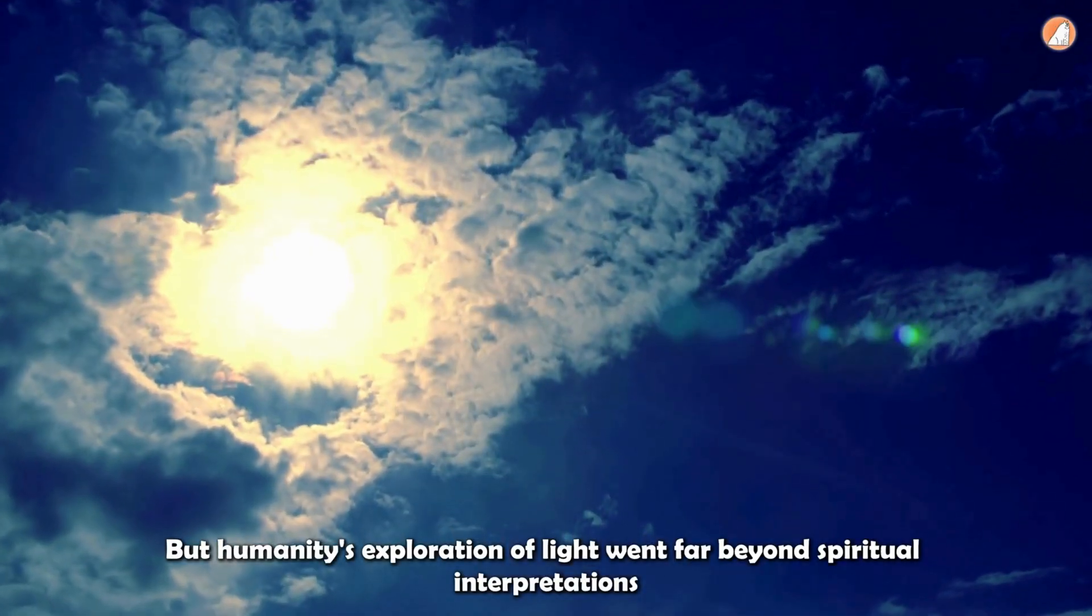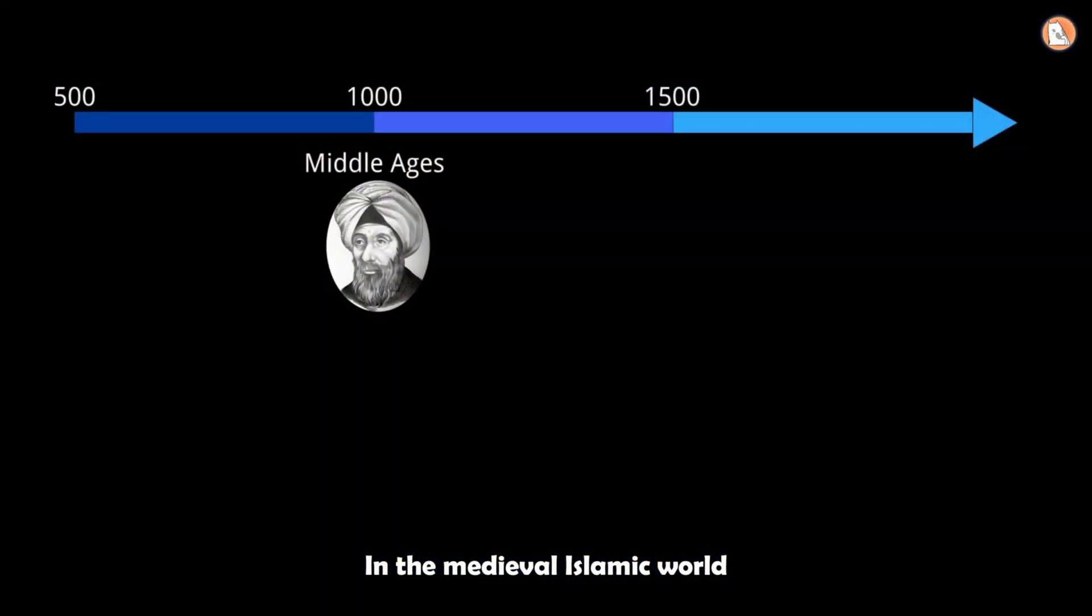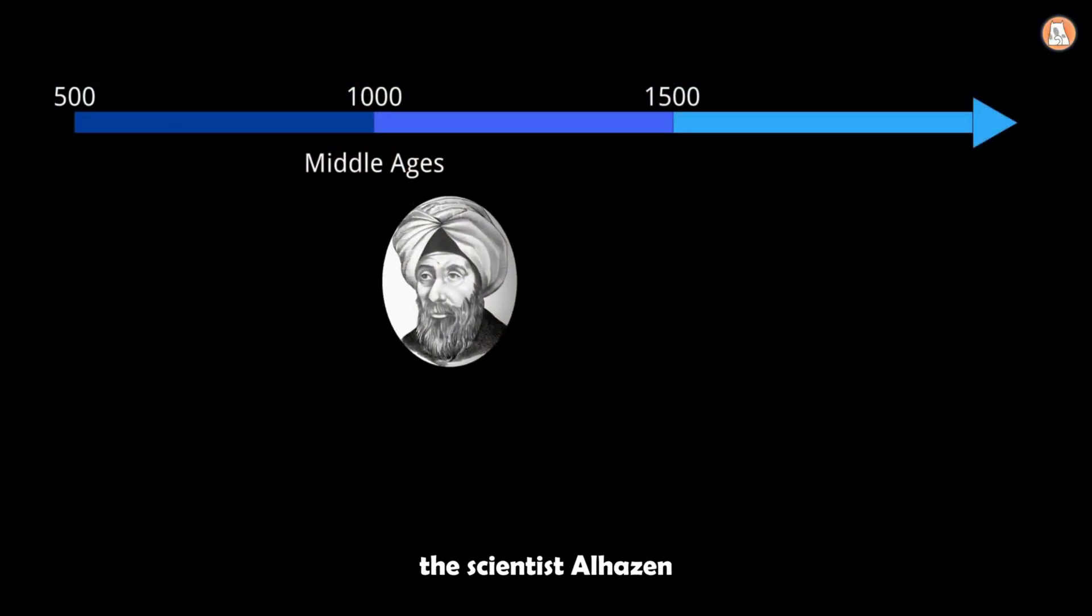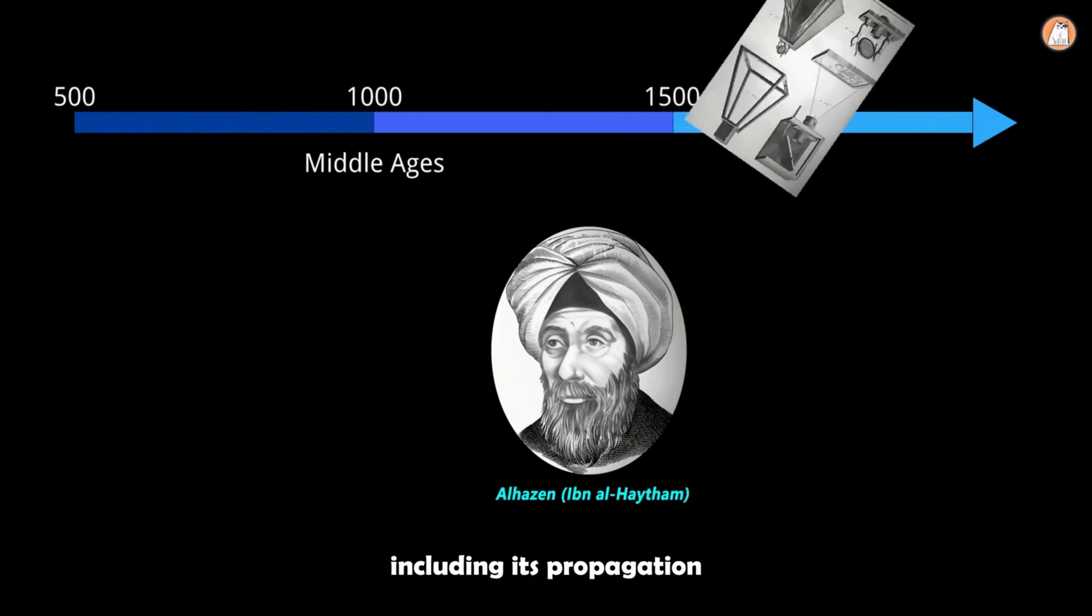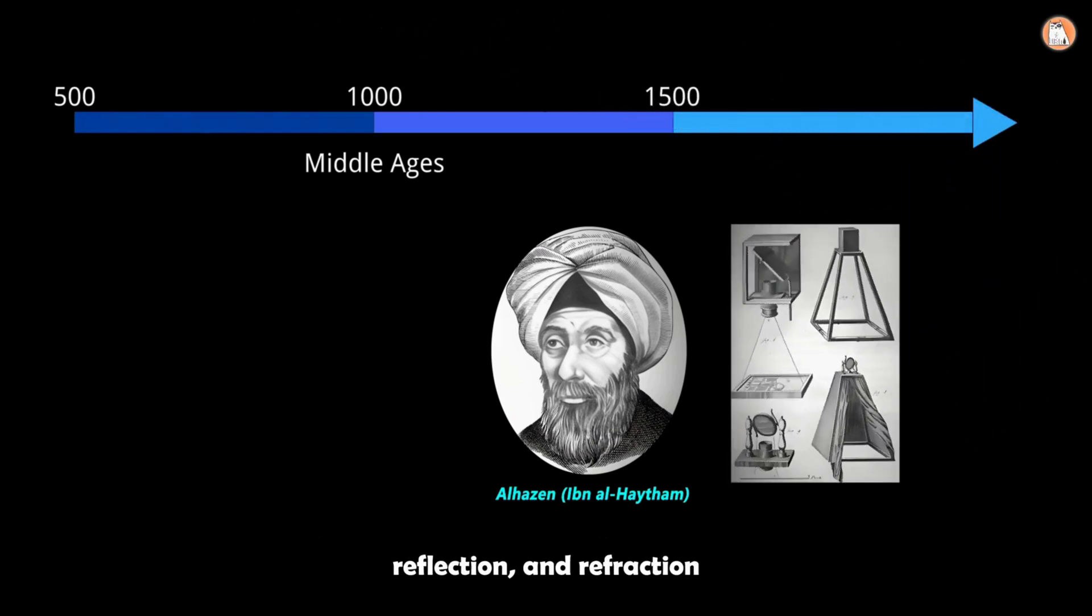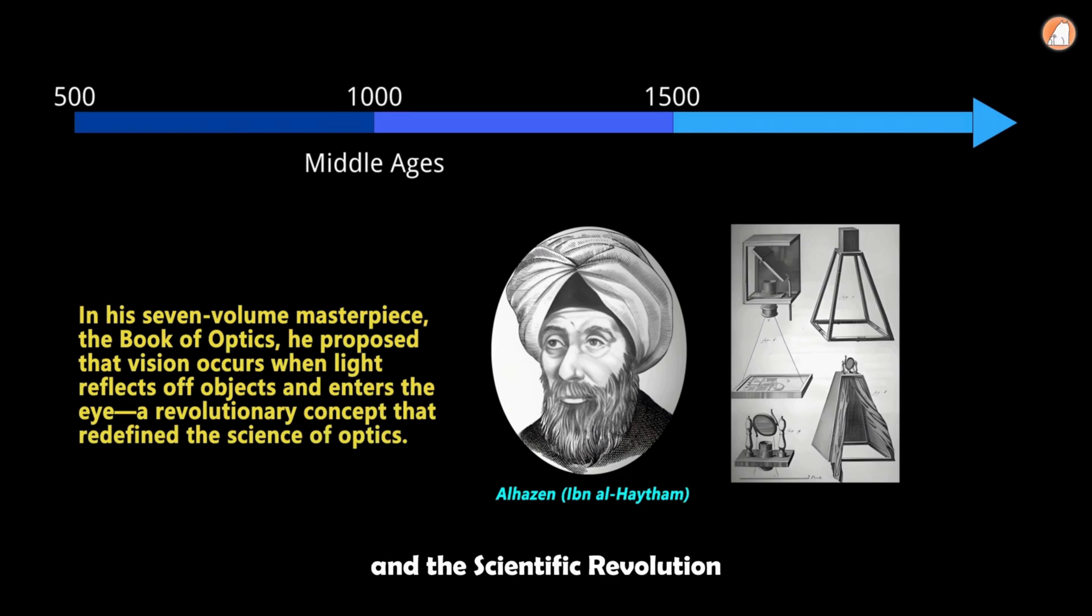But humanity's exploration of light went far beyond spiritual interpretations. In the medieval Islamic world, the scientist Alhazen revolutionized optics through groundbreaking research on light's behavior, including its propagation, reflection, and refraction. His book of optics became a cornerstone of knowledge that would later inspire Europe's Renaissance and the scientific revolution.